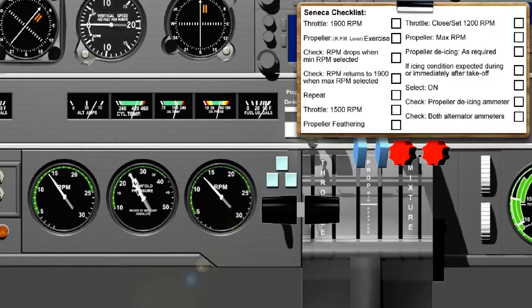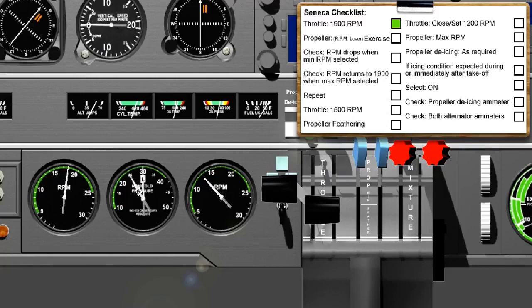The first check is a part of the power check. The remainder forms part of the before takeoff check. Here, we have highlighted the particular parts of the checklist that we are concerned with. Throttle, 1900 RPM. Be aware that you don't really want to use any more RPM than necessary. Propeller RPM lever, exercise. This part of the check ensures that the propeller functions correctly under the impetus of the oil pressure being fed to the pitch control mechanism.